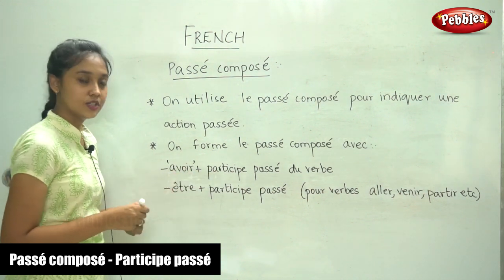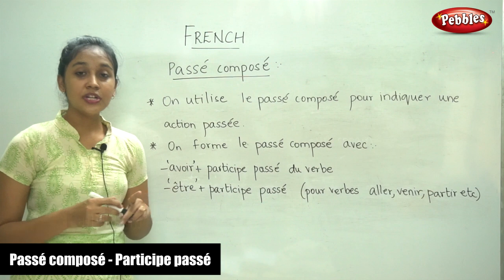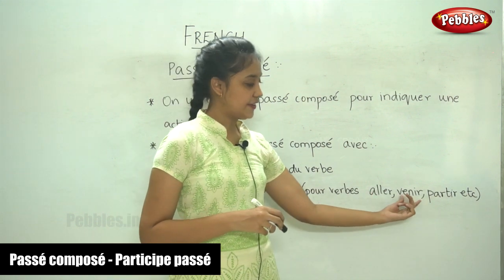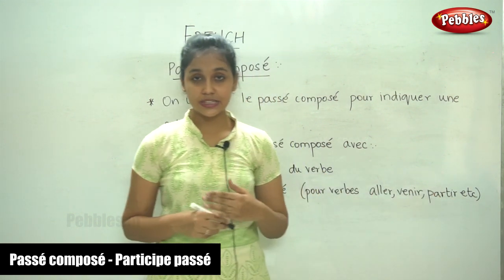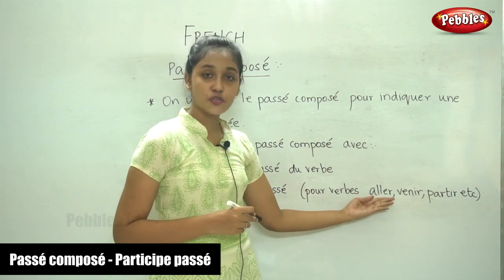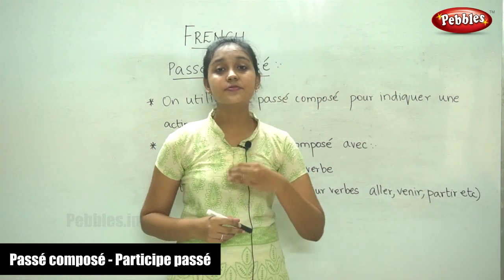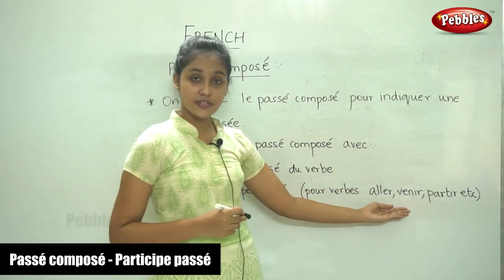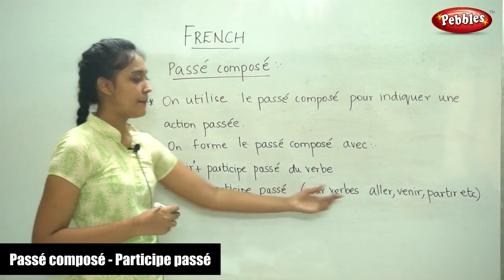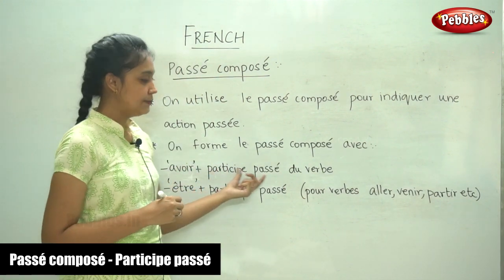In some cases, we need to write the conjugation of être plus the past participle. Which are those cases? They are verbs of motion — for example, aller, venir, partir, sortir, etc. Aller is to go, venir is to come, partir is to leave. For these verbs of motion, we use être plus the past participle.